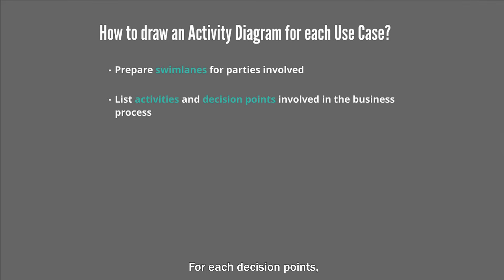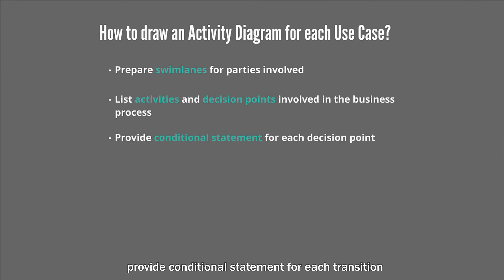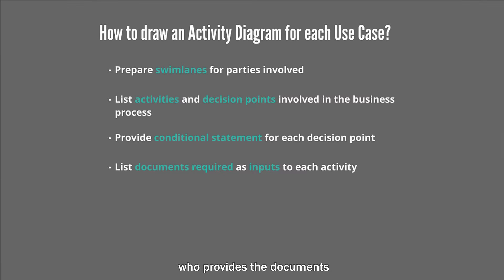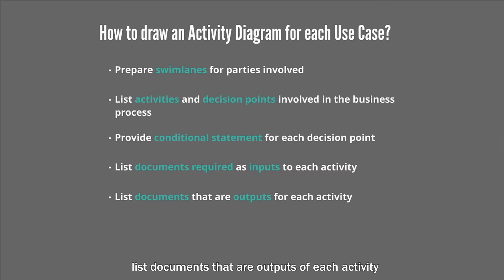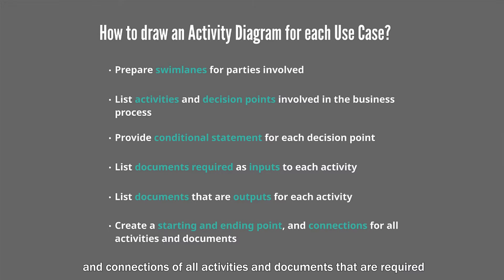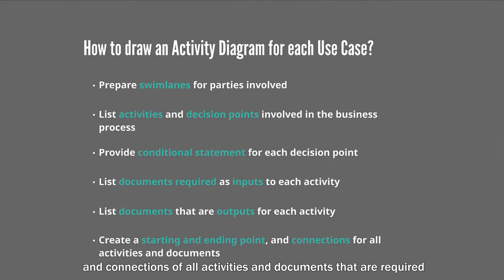For each decision point, provide conditional statements for each transition. If applicable, list documents required as input to each activity and categorize them according to the party who provides the documents. If applicable, list documents that are the output of each activity, and create a starting point, ending point, and connection of all activities and documents that are required.